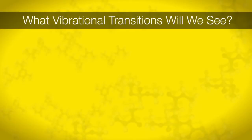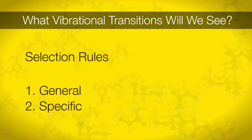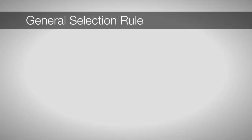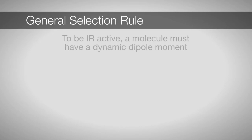Quantum mechanics tells us only certain transitions are possible, or allowed. We call these selection rules. We will commonly hear about two different types of selection rules, general and specific selection rules. A general selection rule tells us about a property that a molecule must have in order to absorb a photon. The general selection rule for IR spectroscopy is that a vibration must have a dynamic dipole moment.